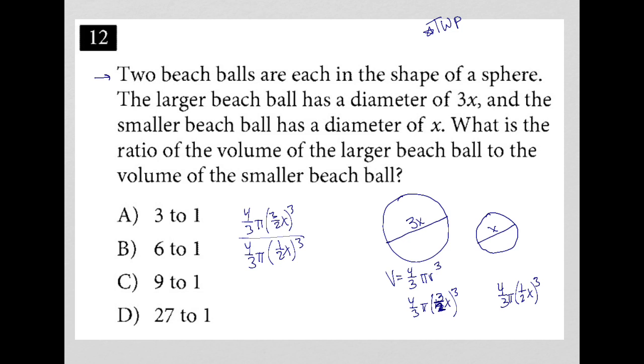And let's just start simplifying this. So the 4 thirds cross each other out. The pi crosses each other out. 3 halves x cubed is the same as 27 eighths x cubed. 1 half x cubed, so this is cubed, is 1 eighth x cubed.